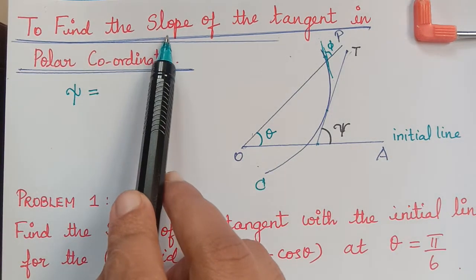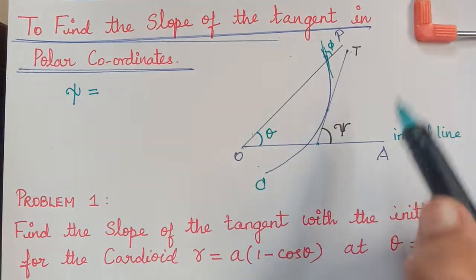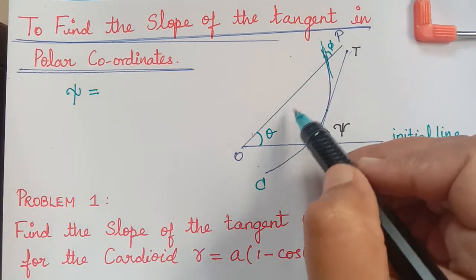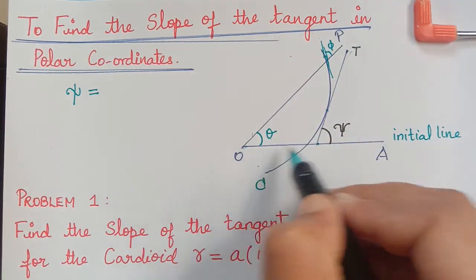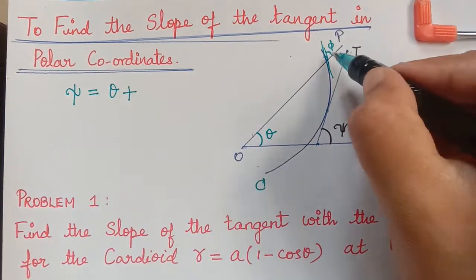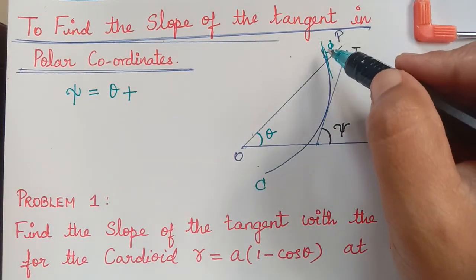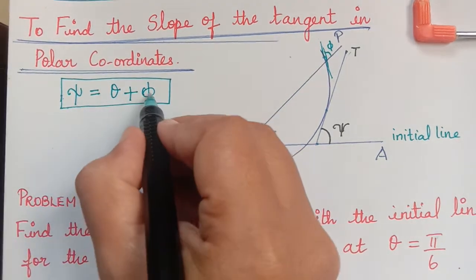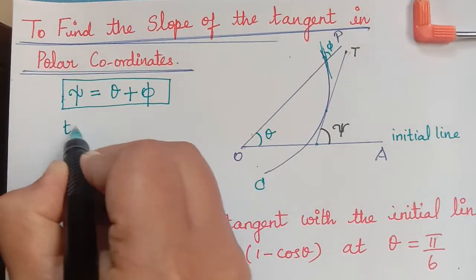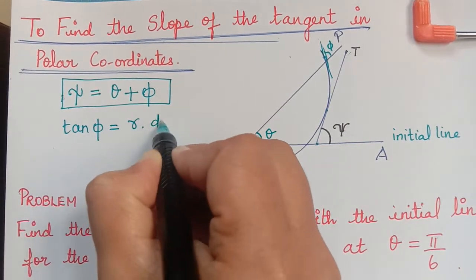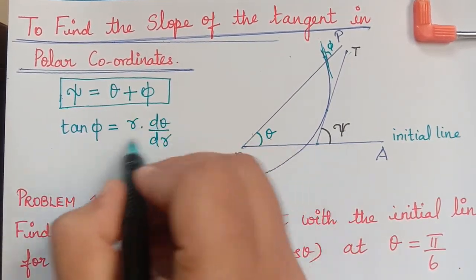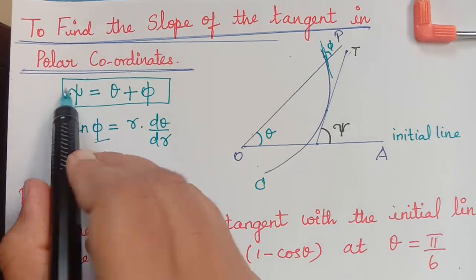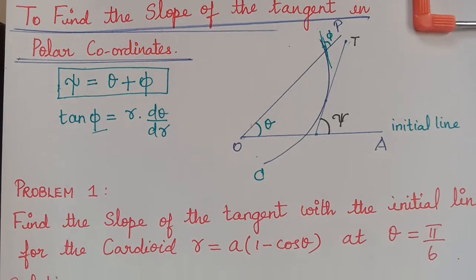In this problem they are asking us to find the slope of the tangent. The slope of the tangent is given by the angle xi between the tangent and the initial line, and that is equal to the sum of theta (the angle between the radius vector and the initial line) plus phi (the angle between the radius vector and the tangent). To find this, first we should know phi, which is given by tan φ = r · dθ/dr. From this we will find phi, substitute it, and obtain xi, the slope of the tangent.